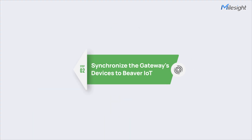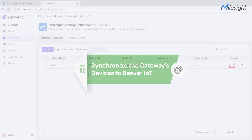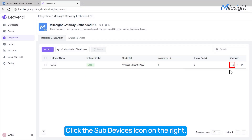After the gateway network server is connected to Beaver IoT, you can synchronize the devices that are already connected to the gateway into Beaver IoT. Click the Sub Devices icon on the right.